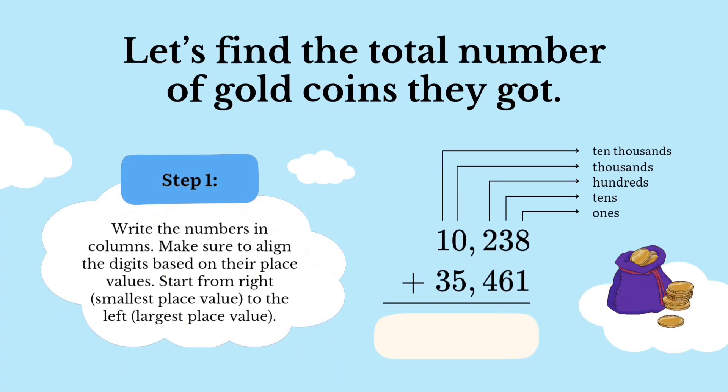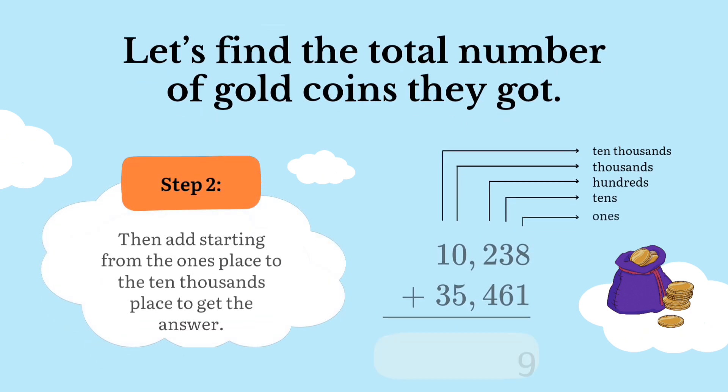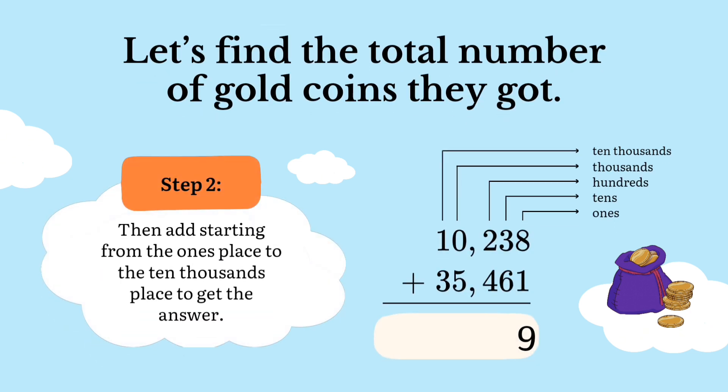Here is step 1 to find the total number of coins: write the numbers in columns. Make sure to align the digits based on their place values. Start from right — smallest place value — to the left — largest place value. Then add starting from the ones place to the ten thousands place to get the answer.